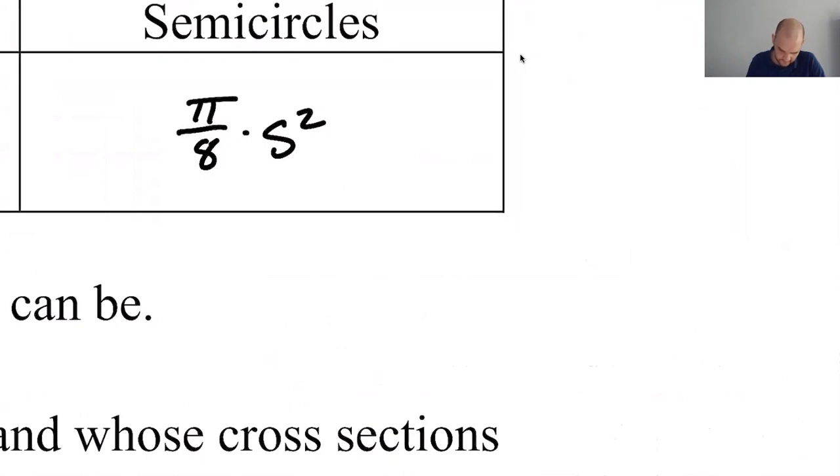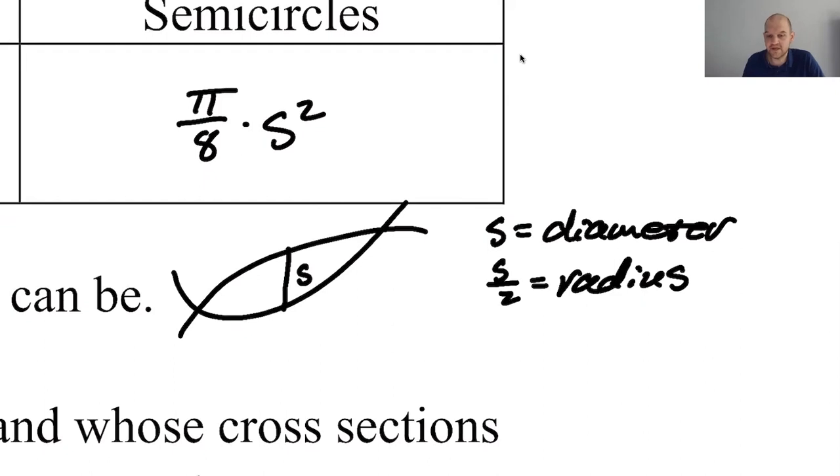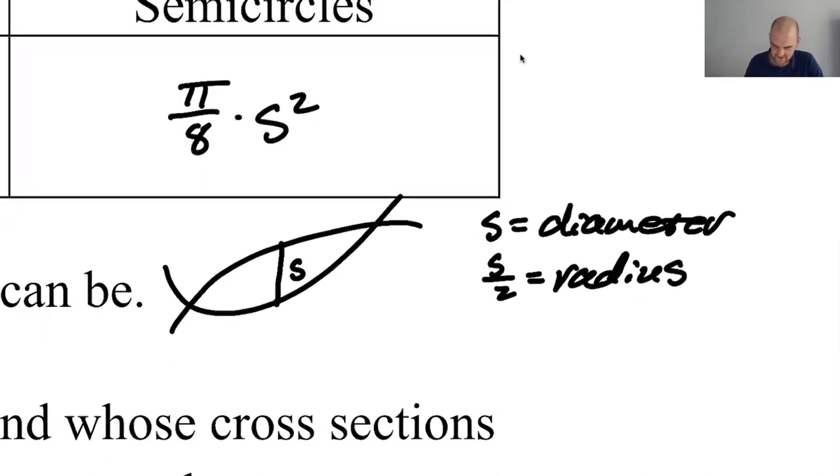So here's your region. Here's S, right? So now S is the diameter. So S over two is the radius. Also, you got to memorize, just memorize it. You should not have to run through this. You should just look at it and be like, semicircle is awesome. Pi over eight S squared. And you just kind of like, go for it.